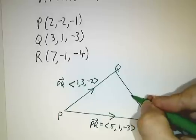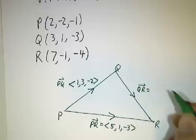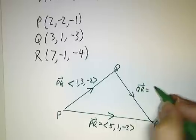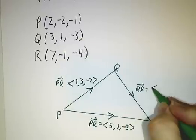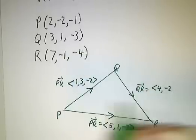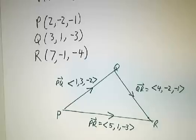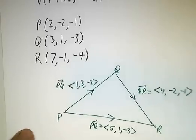And finally, let's do QR. QR is 7 minus 3 makes 4, negative 1 minus 1 makes negative 2, negative 4 minus negative 3 makes negative 1. Now that we've got our vectors, we can start to figure out angles between them.